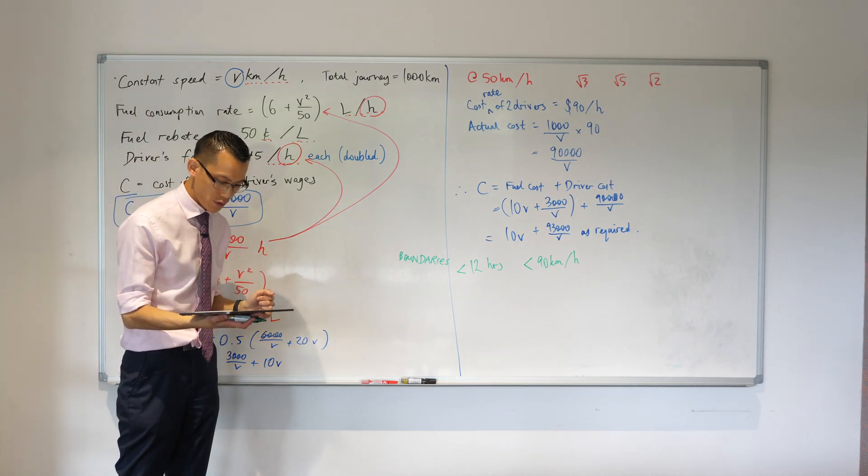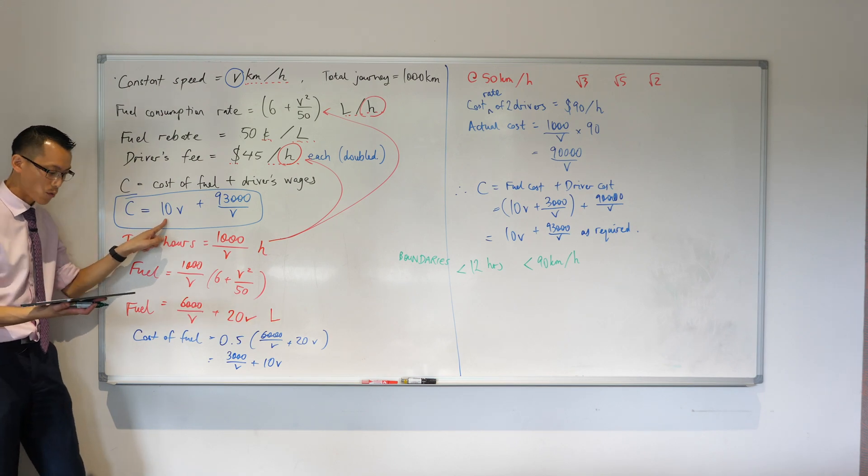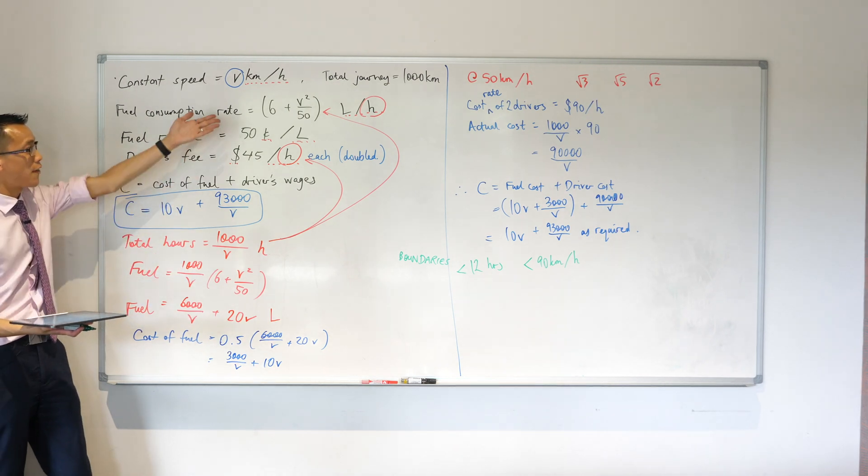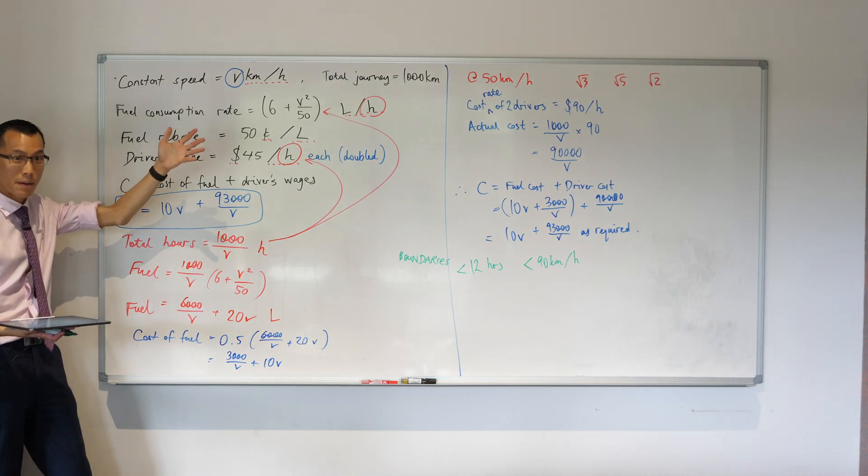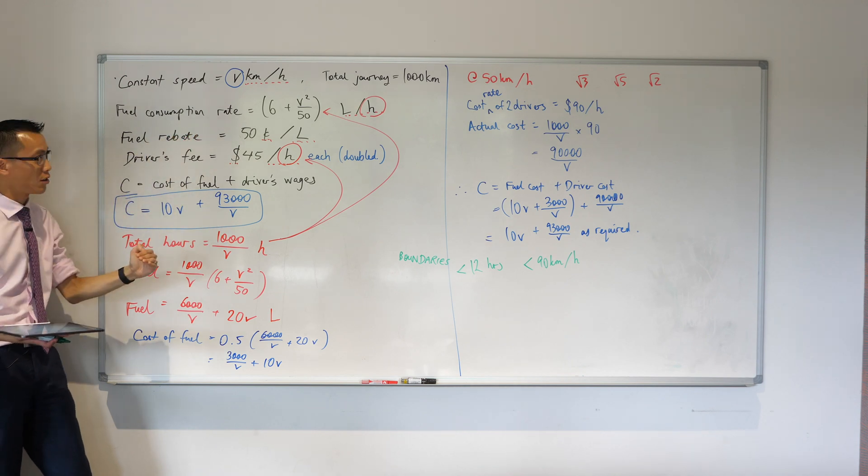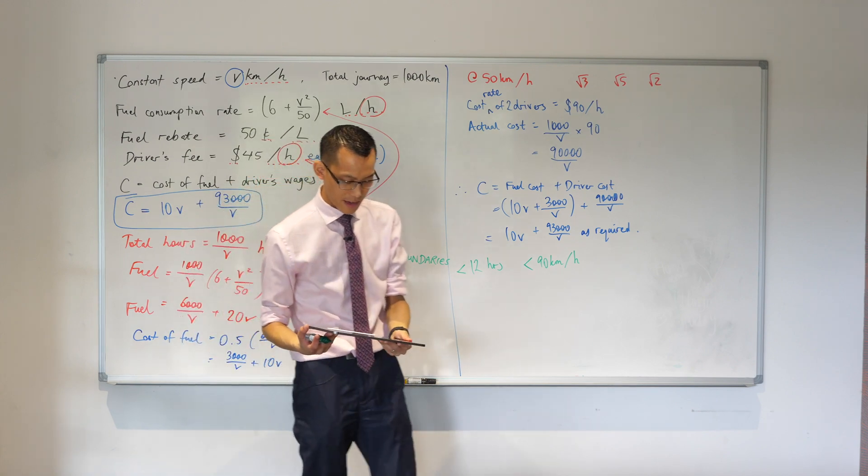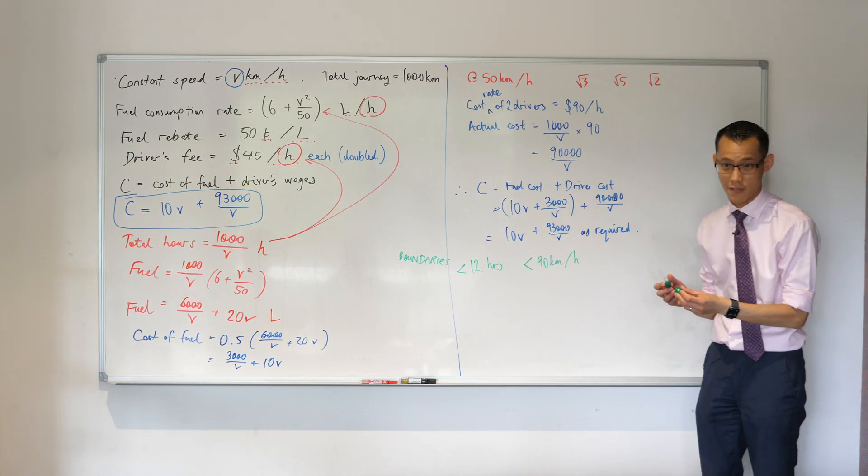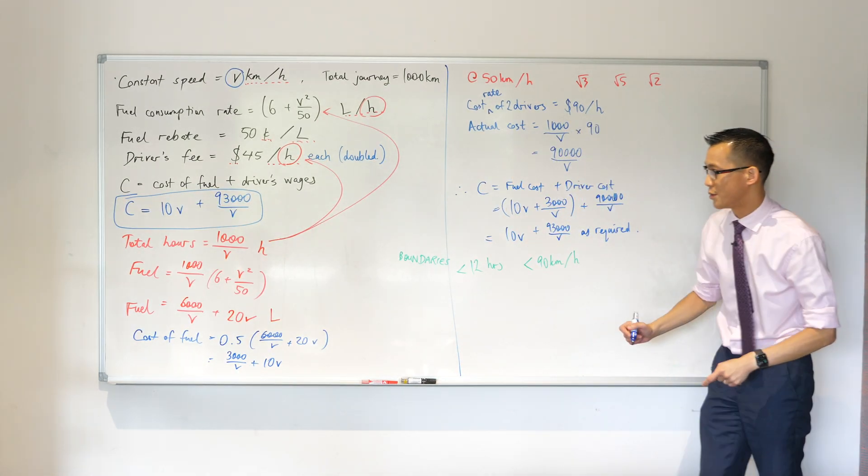At what speed V should the vehicle be driven to minimize the cost C whilst arriving at the destination? Now, remember you guys told me at the start - the faster you drive, the more you're going to have to spend on petrol. But you can't drive too slow because then you will arrive too late. As soon as we know I'm trying to minimize, what's the thing that I'm going to do to that cost function? I'm going to differentiate. So let's do this.